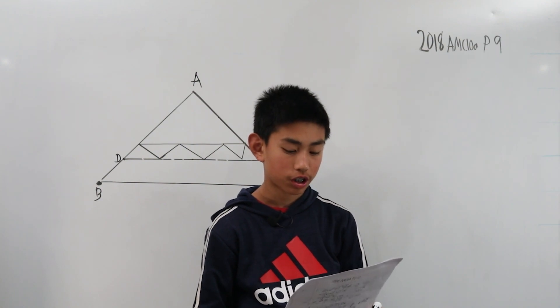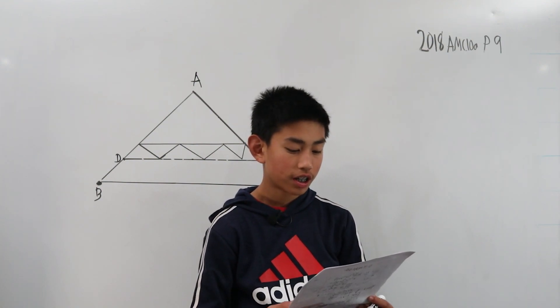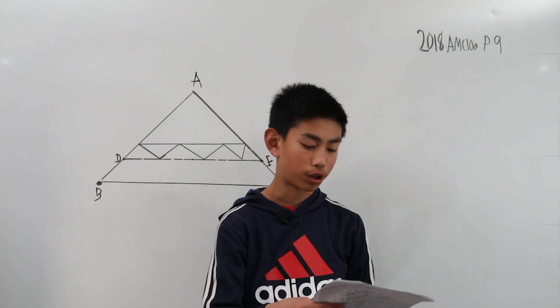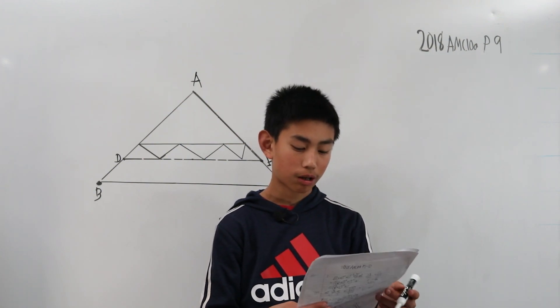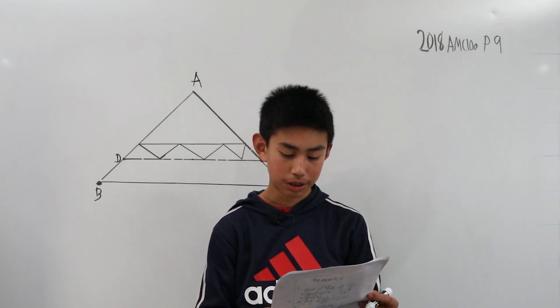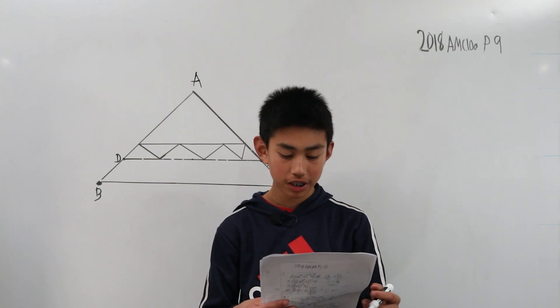Each of the 7 smallest triangles have area 1, and triangle ABC is area 40. What is the area of trapezoid DBCE?